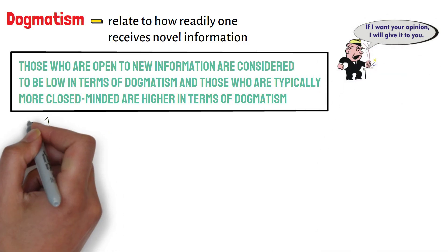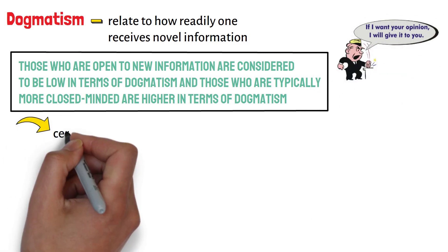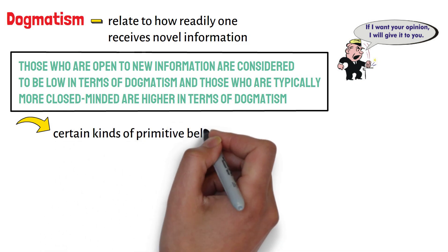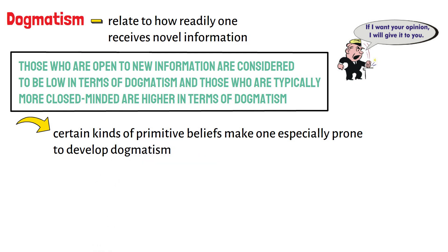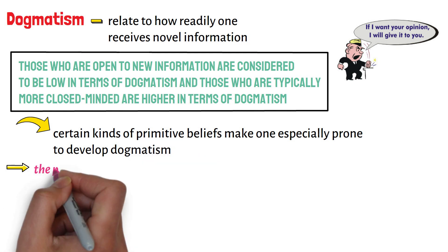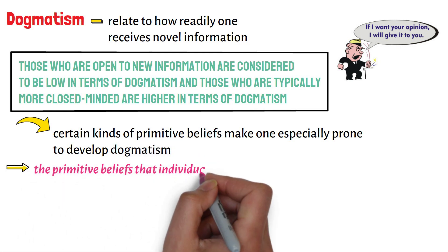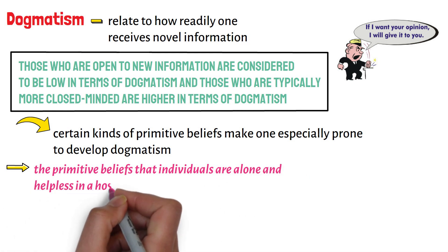Associated with the theory of dogmatism is the assumption that certain kinds of primitive beliefs make one especially prone to develop dogmatism. Especially important are the primitive beliefs that individuals are alone and helpless in a hostile and threatening world.